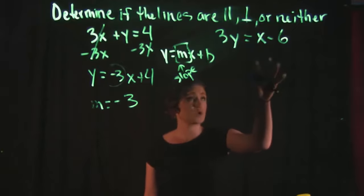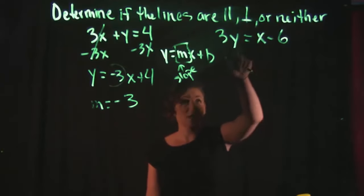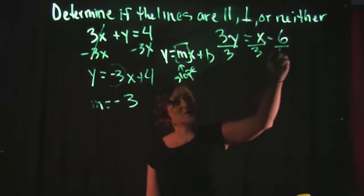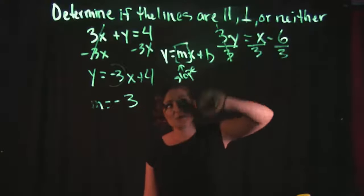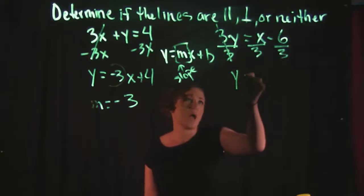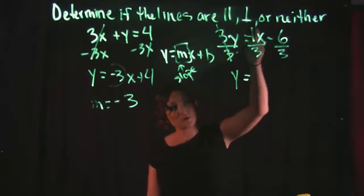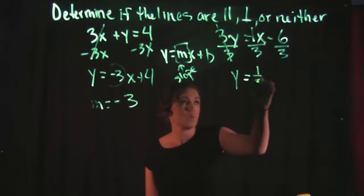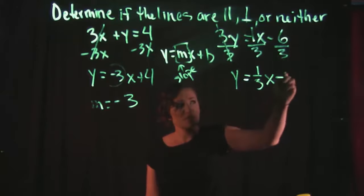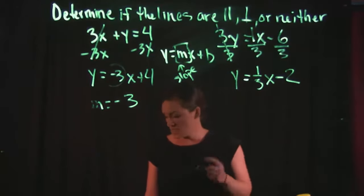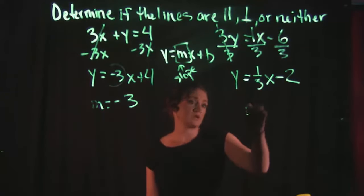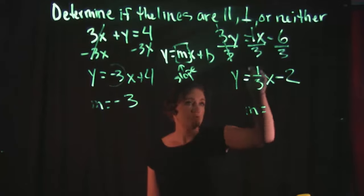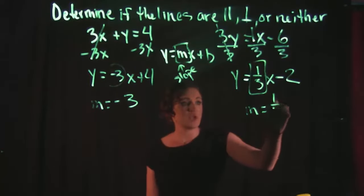I'm gonna pause there and work on the equation over here, get it solved for y. This is 3 times y, so here we need to divide everything by 3. 3 divided by 3, we drop down the y, equals, you gotta make sure you understand there's a 1 understood in front of that x. So this is technically 1/3 x minus 6 divided by 3 is 2. I'm only concerned with my slope here, so my slope is the coefficient of my x, which is 1/3.